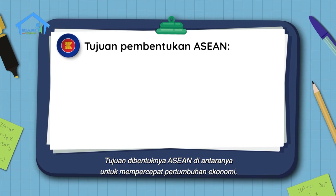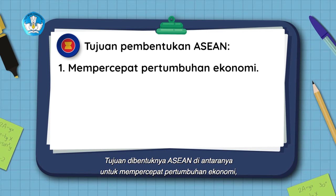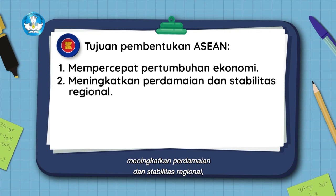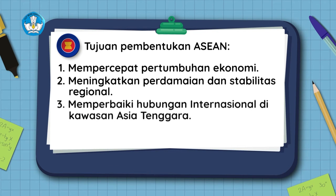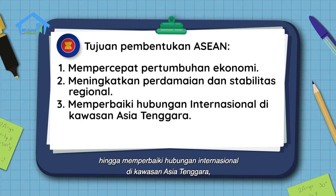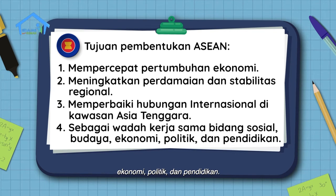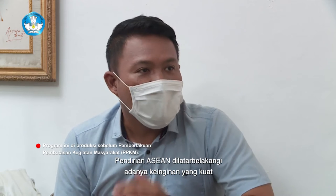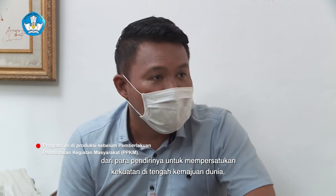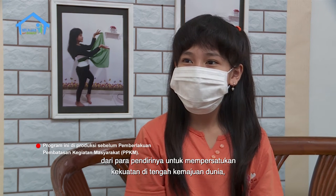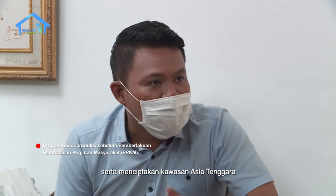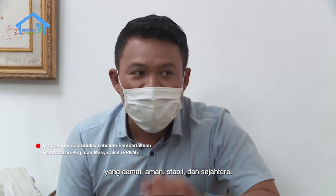Anggota negara ASEAN selanjutnya bertambah berturut-turut. Brunei Darussalam bergabung pada 8 Januari 1984, Vietnam 28 Juli 1995, Laos 23 Juli 1997, Myanmar 23 Juli 1997, dan Kamboja 30 April 1999. Tujuan dibentuknya ASEAN di antaranya untuk mempercepat pertumbuhan ekonomi, meningkatkan perdamaian dan stabilitas regional, memperbaiki hubungan internasional di kawasan Asia Tenggara, serta sebagai wadah kerjasama bidang sosial, budaya, ekonomi, politik, dan pendidikan.